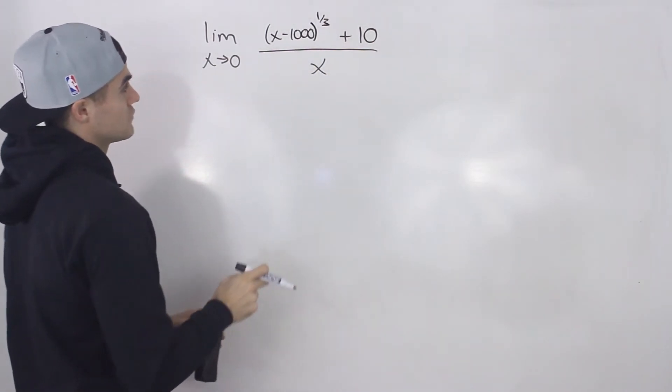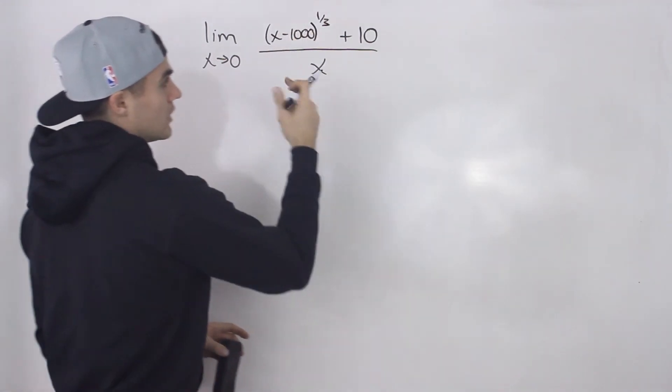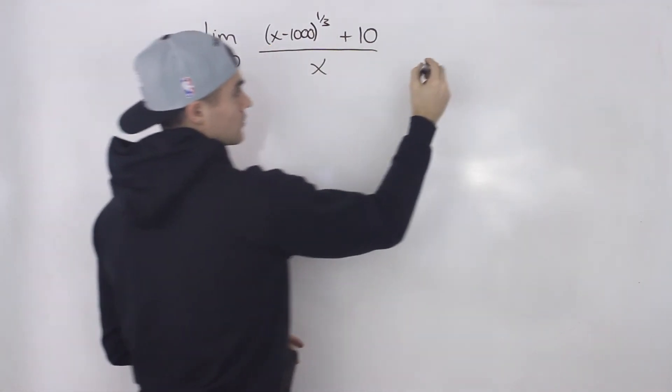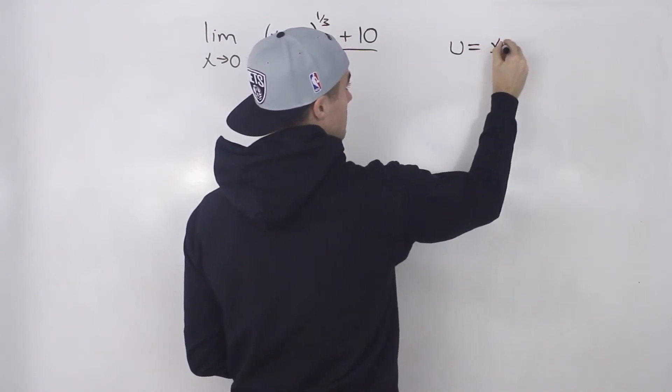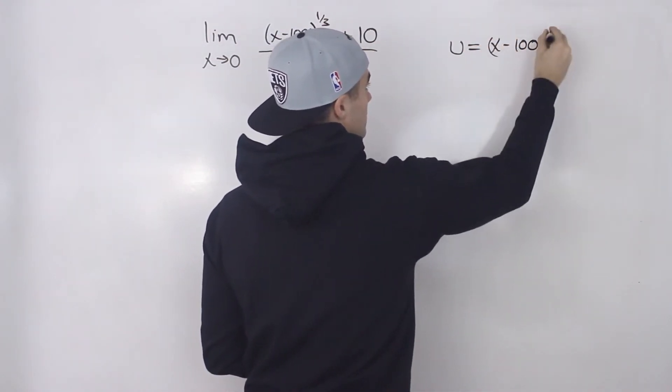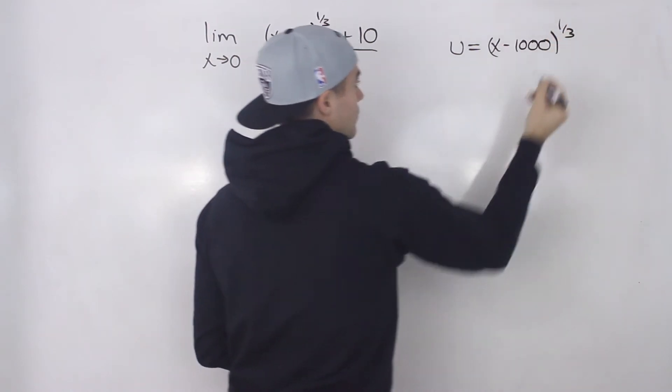So to do a change of variable, we've got to let a new variable equal that whole term. Let's say u is equal to x minus 1,000 to the power of 1 over 3.